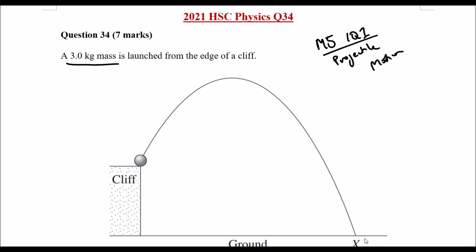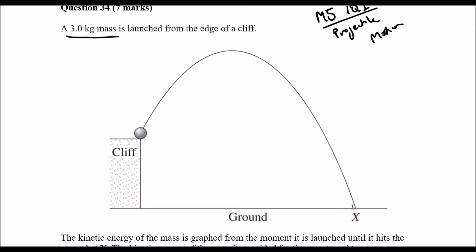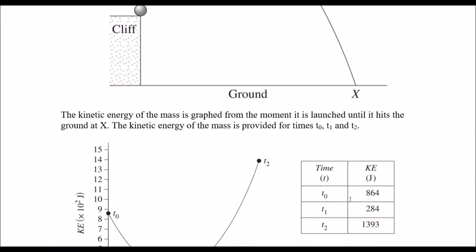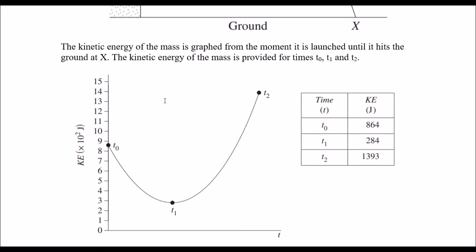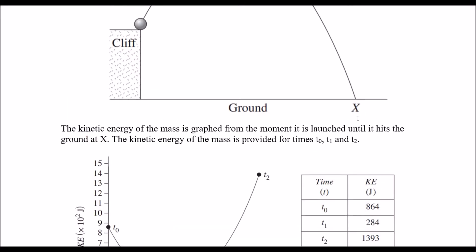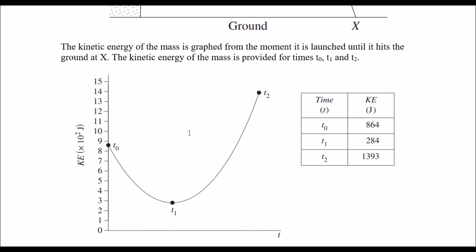and then drops back down to the ground, which we label as point X. We also have a kinetic energy profile diagram for the mass as it's been launched, and we have three time intervals to represent the kinetic energy. We have t0 with a kinetic energy value of 864 joules, t1 at peak height with 284 joules,